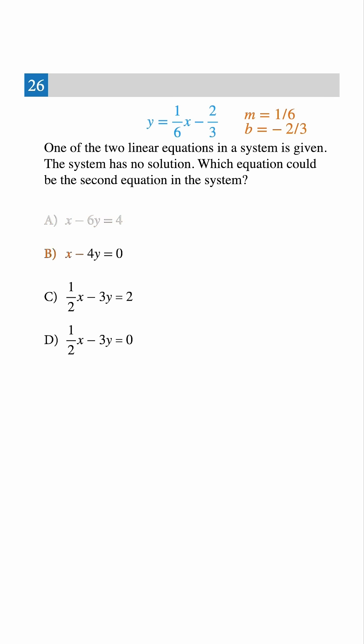Choice B, x minus 4y equals 0. Rewriting that we get y equals 1 fourth x. Different slope, so the lines cross once, which means one solution. Not this either.